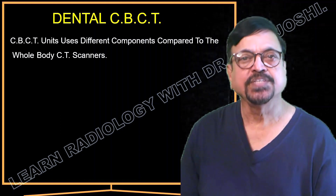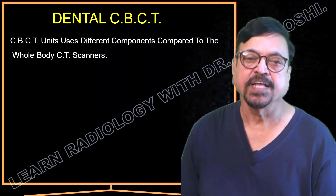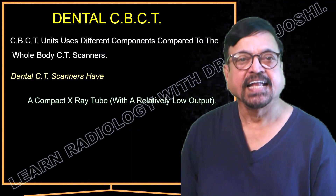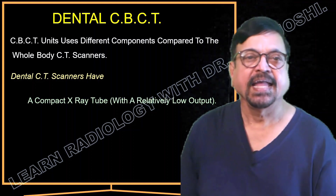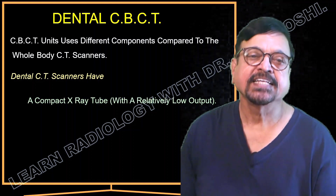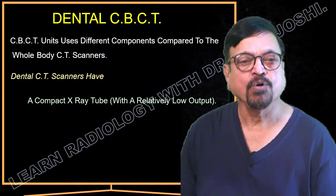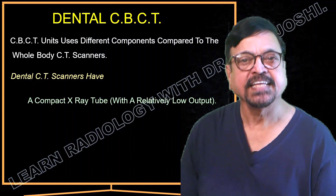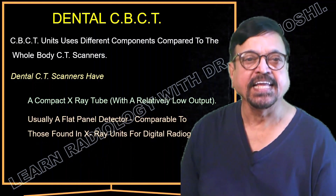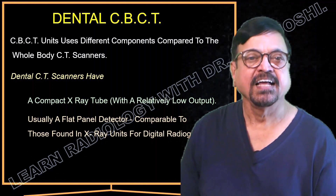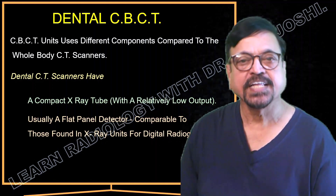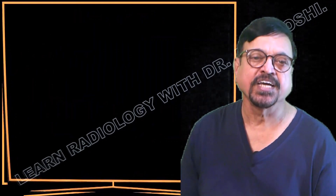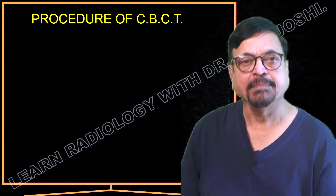CBCT units use different components compared to whole body CT scanners. Dental CT scanners have a compact X-ray tube — slightly larger than that of an OPG machine and smaller than a conventional CT machine — because it needs a relatively low output compared to conventional CT. A flat panel detector, similar to those used in digital radiography, is used here in a similar way to produce images.